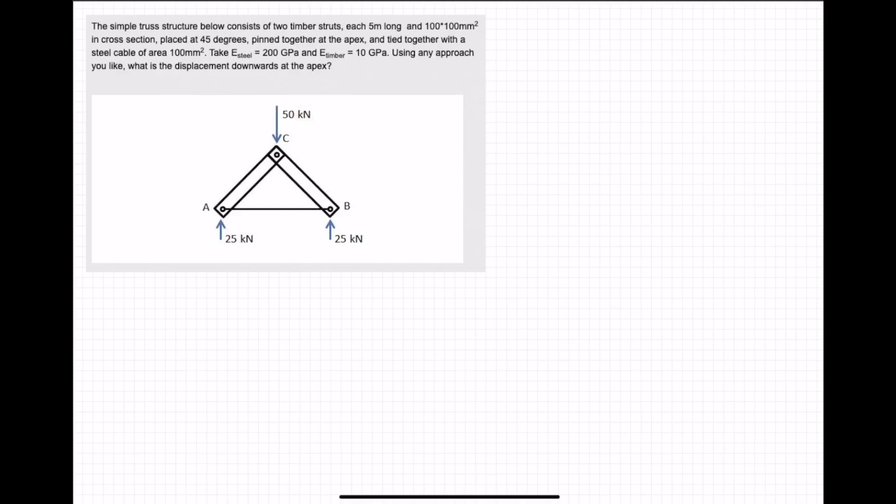Here I have a truss from the Structural Behaviour course. The question is, this simple truss structure consists of two timber struts, AC and BC, each 5m long and 100 by 100mm squared, placed at 45 degrees, pinned at the apex, and tied together using a cable. Using any approach, find the displacement down at this apex.